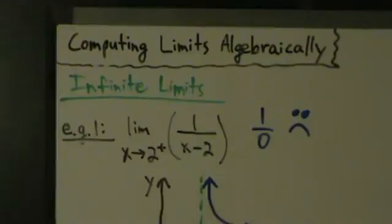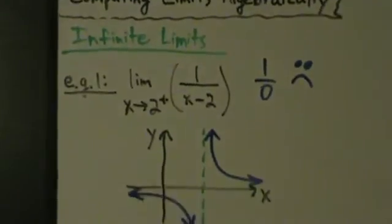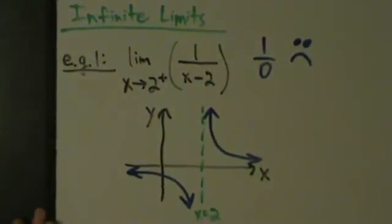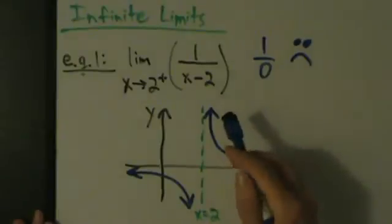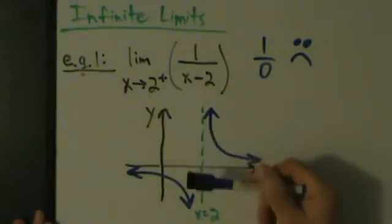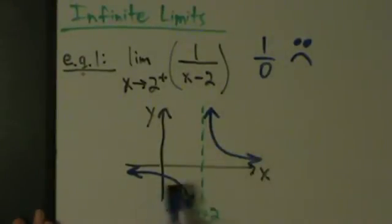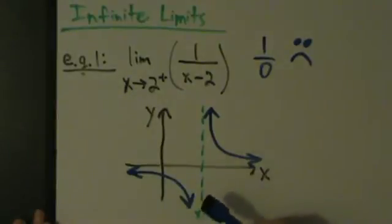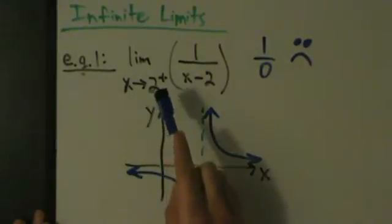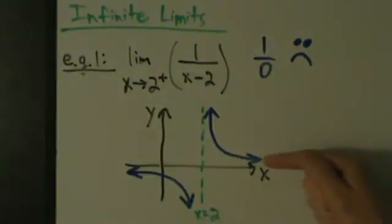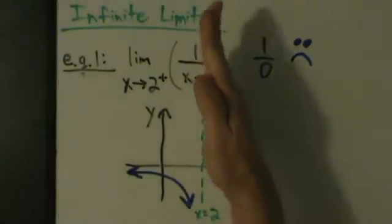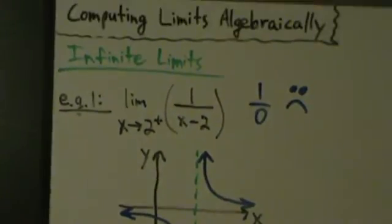So what are we going to do here? Before we talk about how to do it algebraically, let's remember how we did it graphically. This is the graph of 1 over (x minus 2). It has a vertical asymptote at x equals 2 and a horizontal asymptote on the x-axis. As x comes into 2 from the right, y is going all the way up to positive infinity. So we know from the graph that the answer is positive infinity.